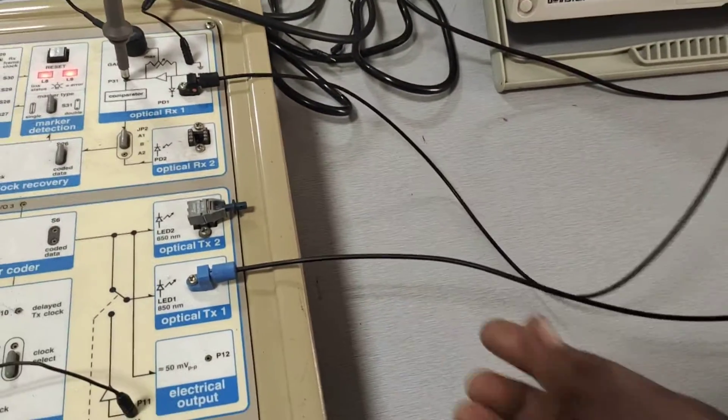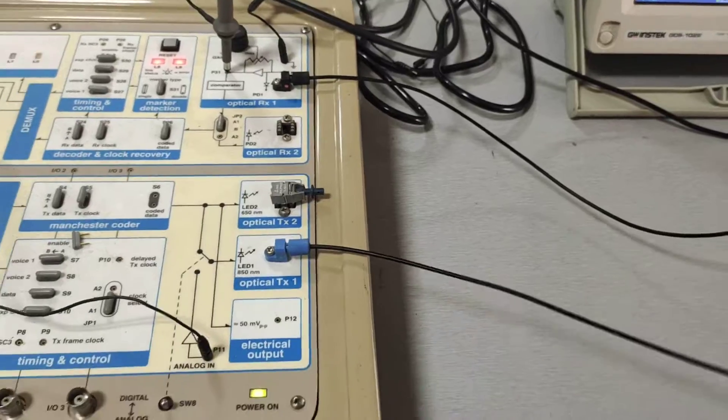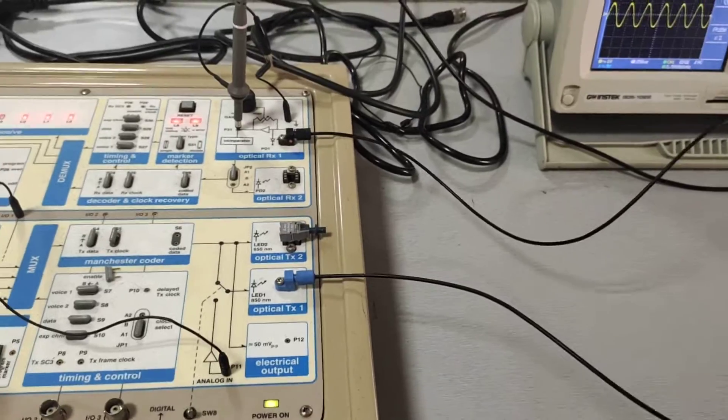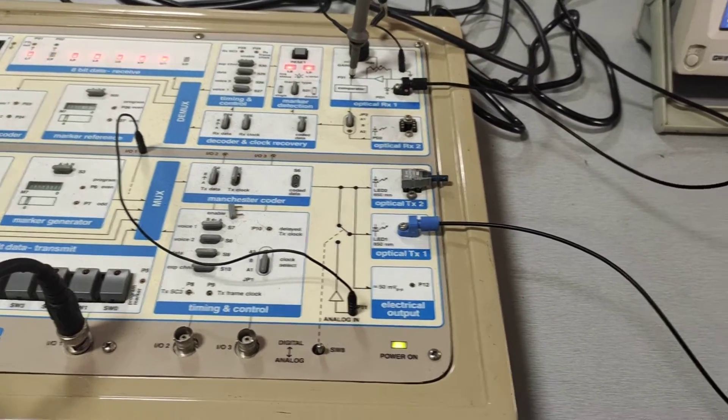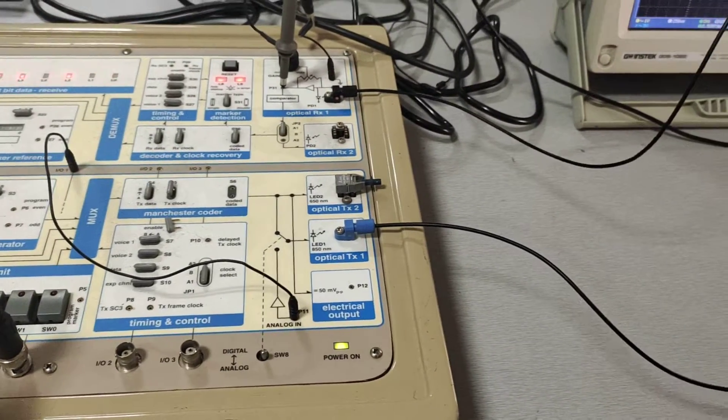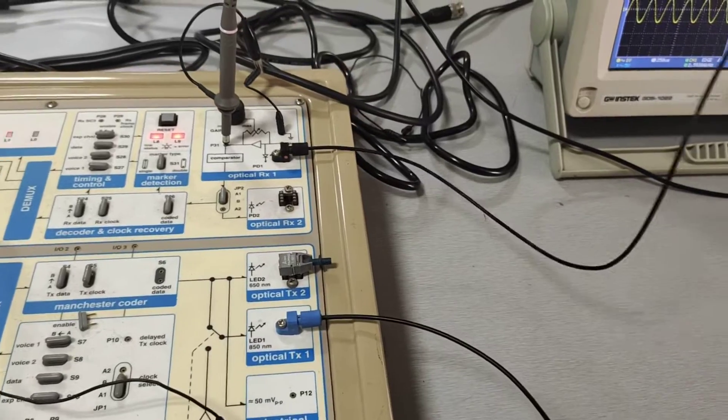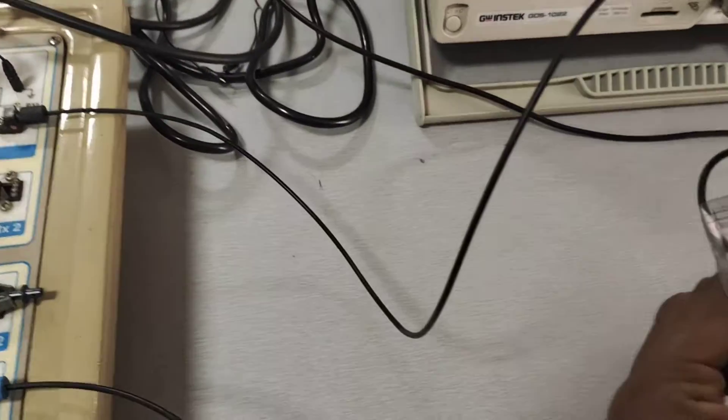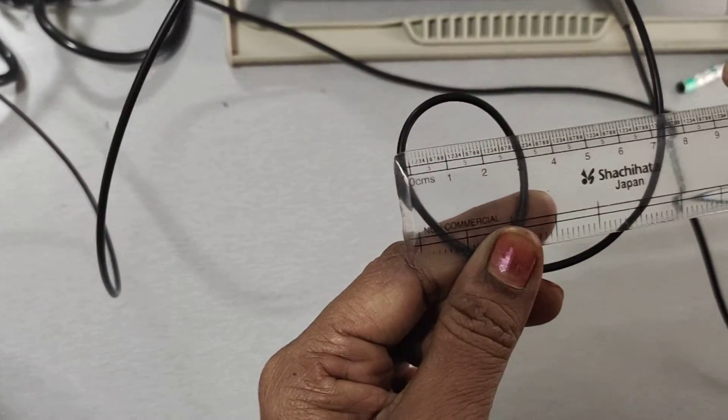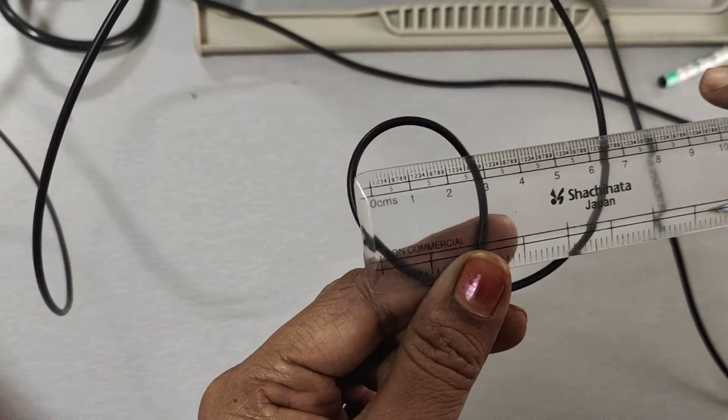We are connecting a 1 meter cable. We already measured the output voltage for the 1 meter cable in the attenuation loss experiment. Here we are going to make a bend in the optical fiber connected between the transmitter and the receiver. Initially, the bend radius is 3 centimeters.